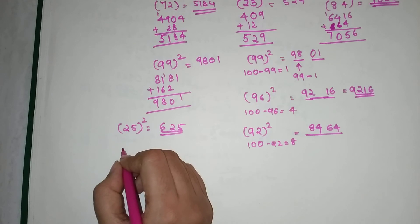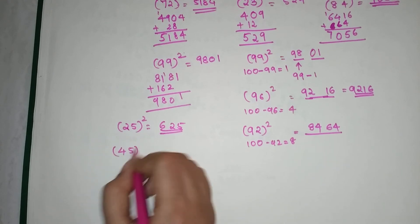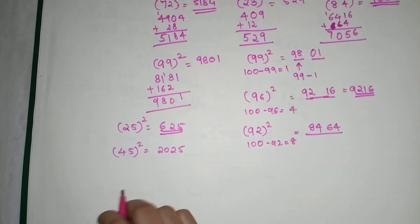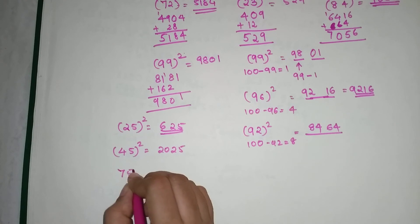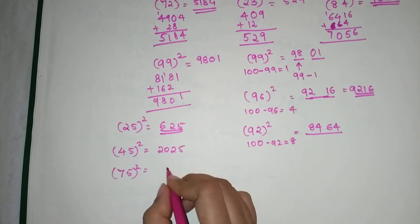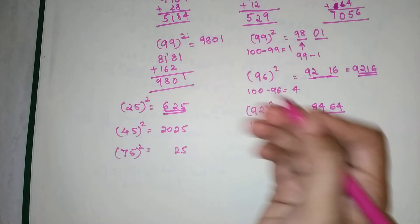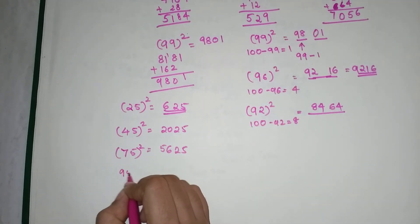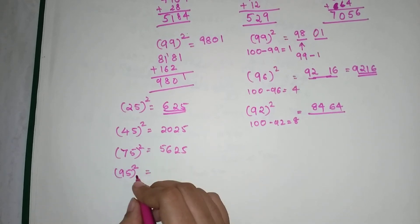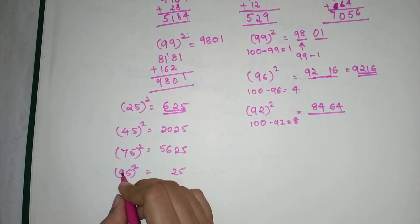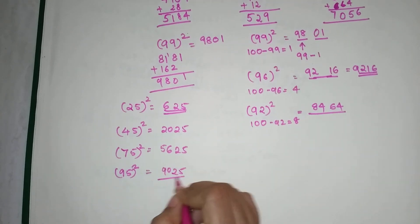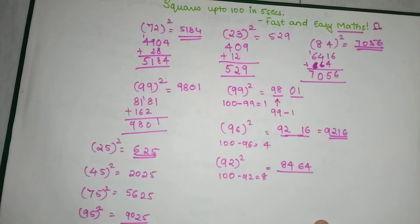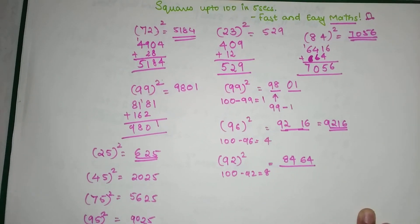Let's try 45²: last two digits are 25, and 4 × 5 = 20, so the answer is 2025. For 75²: last two digits are 25, and 7 × 8 = 56, so the answer is 5625. For 95²: last two digits are 25, and 9 × 10 = 90, so the answer is 9025.